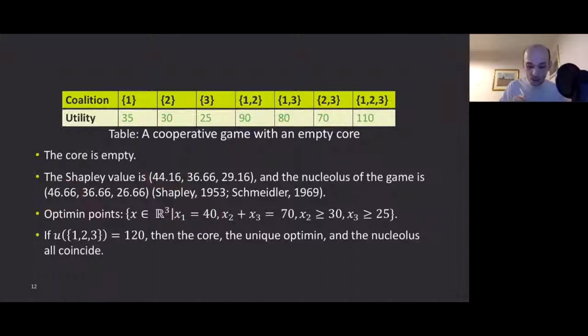So the intuition behind this solution is as follows. Notice that player one receives 40 under the optimum criterion, which is strictly less than player one's payoff under the Shapley value as well as the nucleolus. However, notice that player two and three under the Shapley value as well as the nucleolus, they receive less than 70. So they have incentives to deviate from both Shapley value and the nucleolus. And in case they deviate player one's utility is 35. So the optimum value of this payoff allocation of Shapley value as well as the nucleolus is 35. Whereas under the optimum point, player two and player three has no incentives to deviate from this payoff allocation. And therefore player one can safely enjoy the minimum payoff of 40. If we increase the payoff of the grand coalition from 110 to 120, then both the core and the unique optimum point and the unique nucleolus, they all coincide.